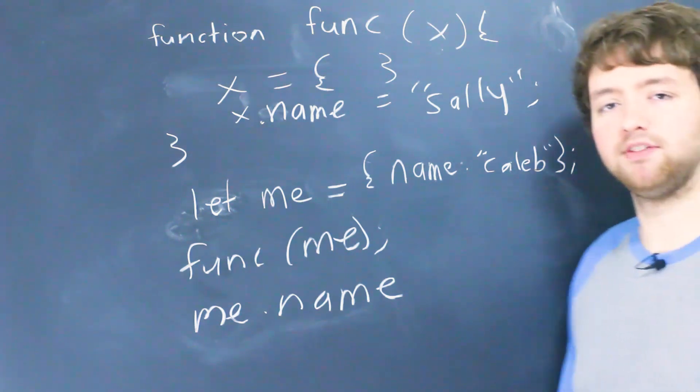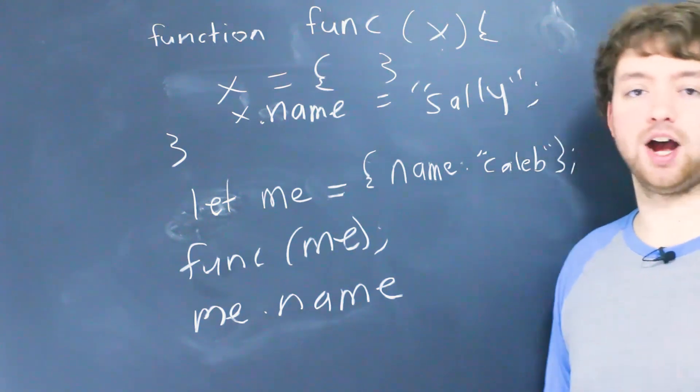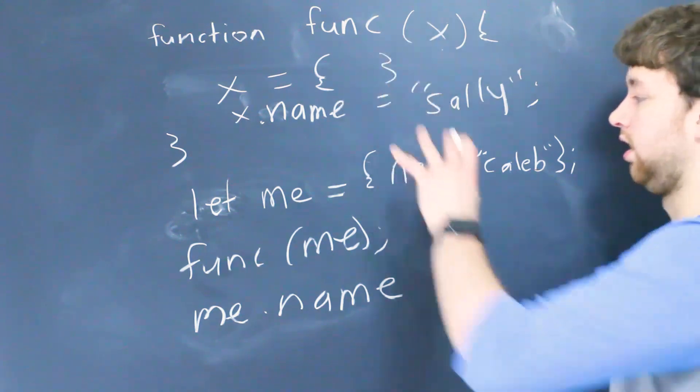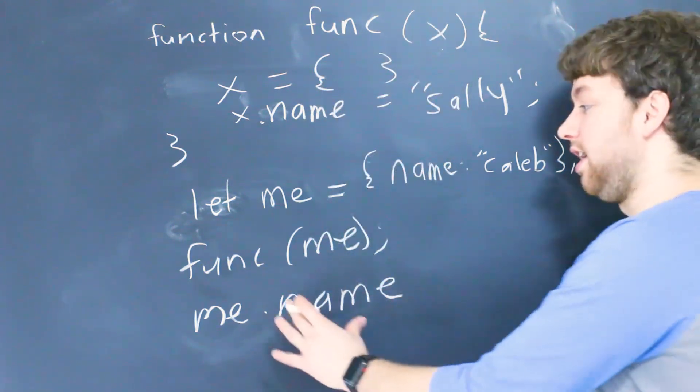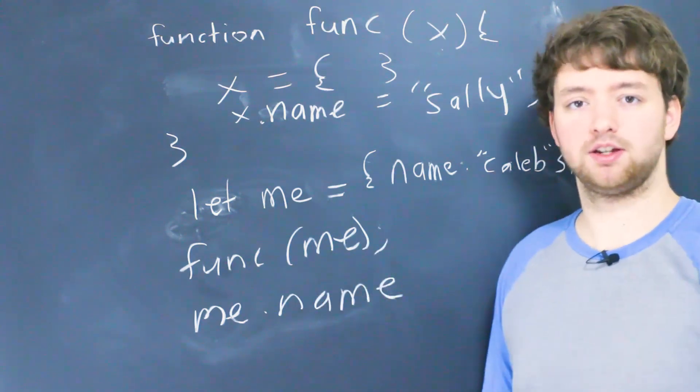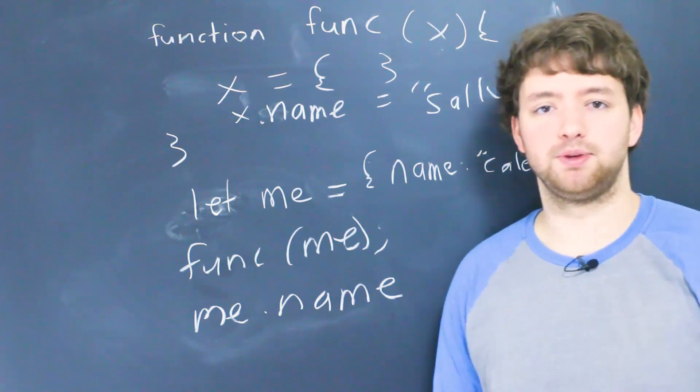Alright so that was a lot of information hopefully that really cleared up how things are passed inside of JavaScript. It can be confusing so what I recommend is just to create a function, start passing information into it, change things and see if after the function call they persist or if they do not persist. Really good way to practice some of this material and I hope to go over some of that in the upcoming videos.